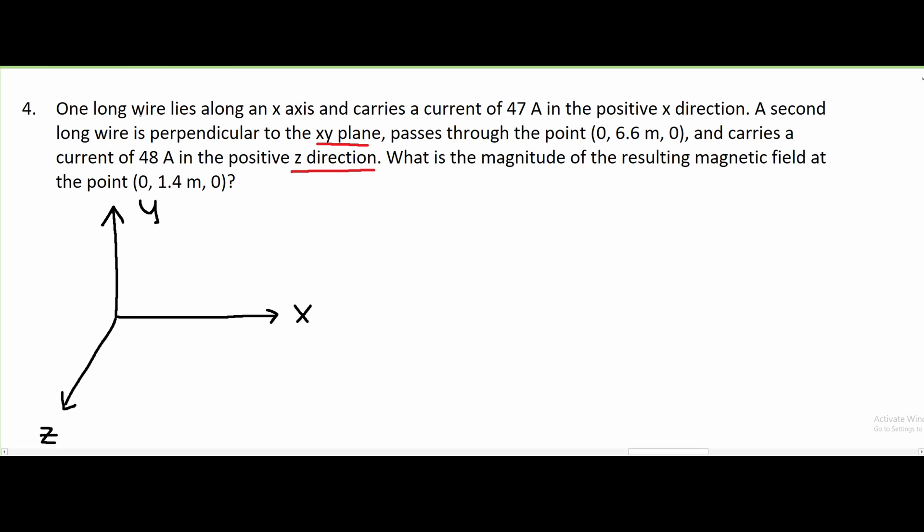First, we are told that we have one long wire along the x-axis, which carries a current of 47 amps in the positive x direction. Looking at this first wire, we are going to see that it comes this way along our x-axis, in the positive direction, which is this way, and it is i that is equal to 47 amps.